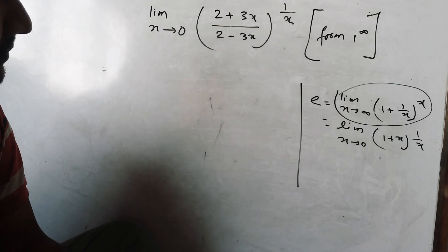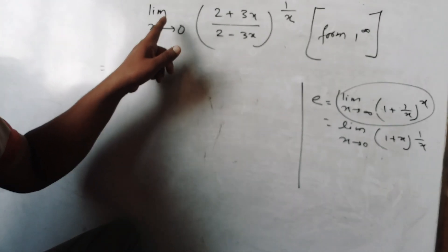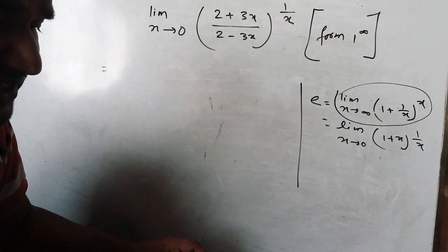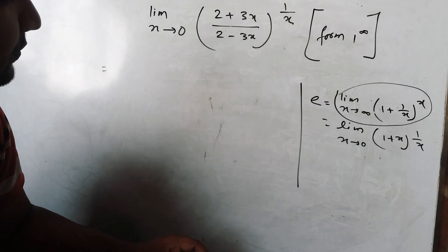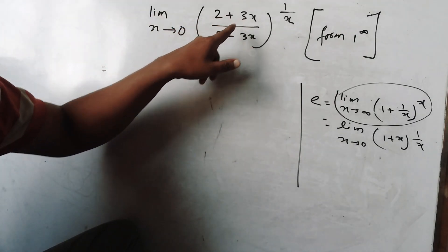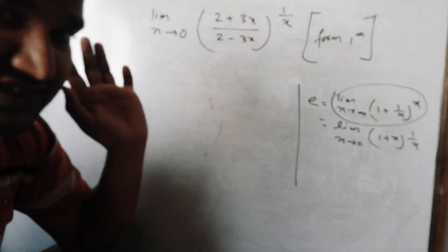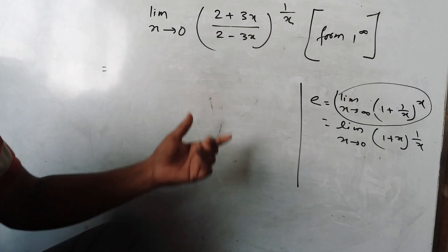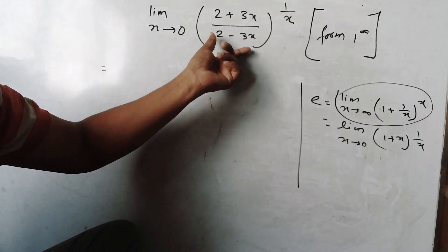The first question: I have to find the limit as x tends to 0 of (2 plus 3x) divided by (2 minus 3x), where the base is a variable and the power is also a variable.